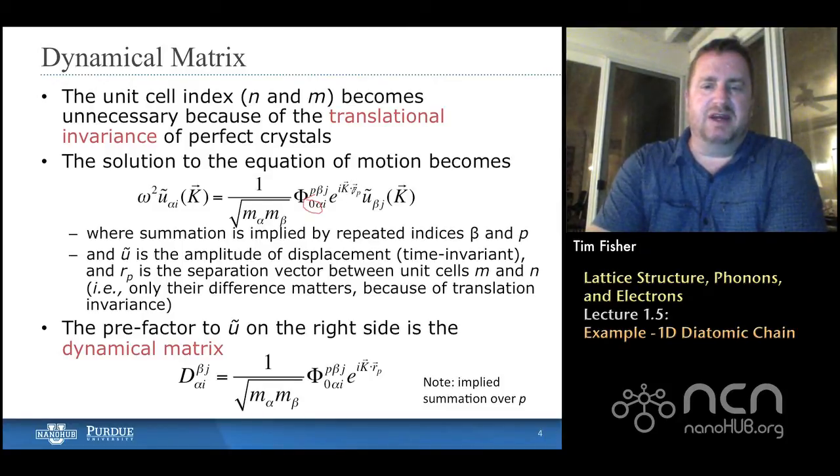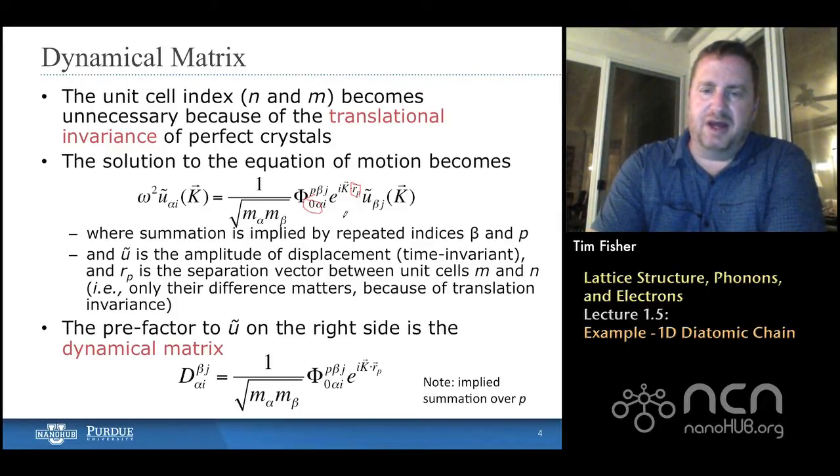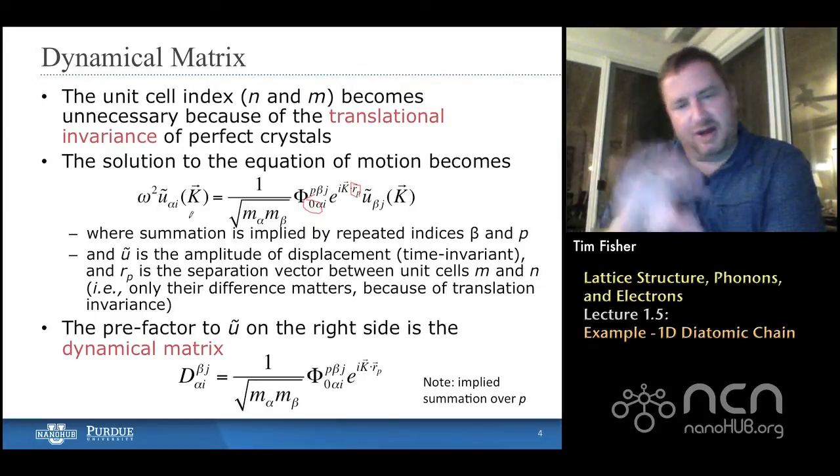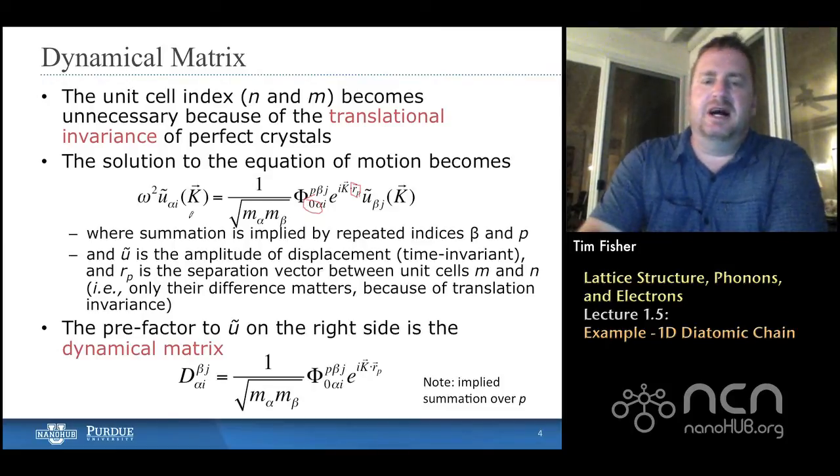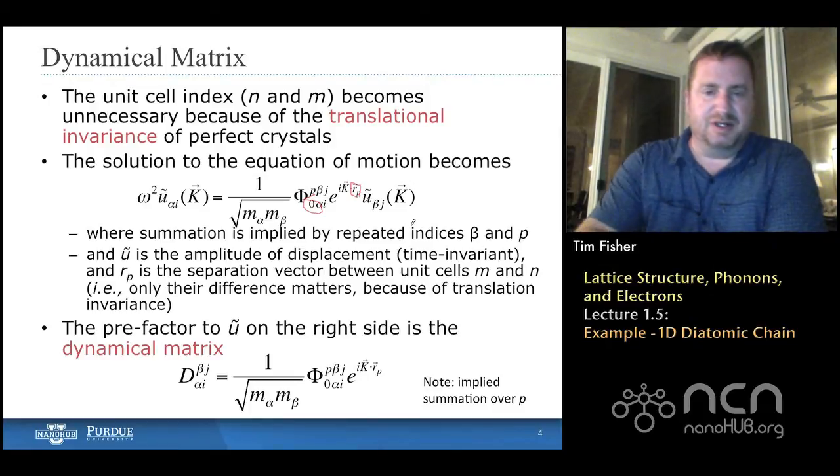But we also have from the plane wave solution, we have a vector R sub P that connects the unit cell zero with whatever unit cell the beta atom, the P beta atom, is sitting in. So that's a nuance. And again, the spring constant matrix has to be multiplied by the plane wave form of the solution. And there's also an implied summation over this. So again, we're interested here in the atom alpha, right? And now we're just worried about whether that's the first or second atom in our zero unit cell. But we will have to sum up different interactions from terms within its own unit cell and possibly from without, from other unit cells.